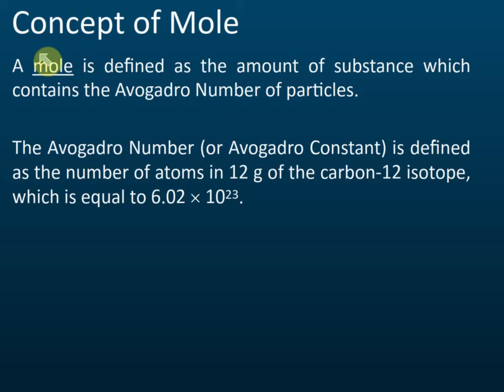What does this mean? Scientists want to deal with the number of particles — the number of atoms, the number of molecules, the number of ions. They want to develop a smart way for them to count the number of particles in a substance, and that's what they do.